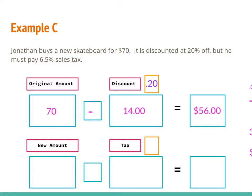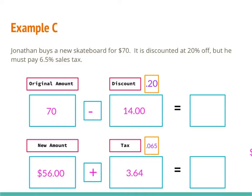I want to make sure I'm paying tax only on the amount I'm actually going to spend — you don't want to figure out tax on $70 when you're actually buying the item for $56. Now that I have $56, I need to figure out what the tax is, so I move that down to my new amount. It's a tax, so it's going to be adding to my bill. My tax is 6.5%, and although that has a decimal in it, it is still a percent. Moving the decimal two places to the left gives me 0.065. I multiply 56 times 0.065 and get $3.64. So $56 plus $3.64 gives me a final total of $59.64.